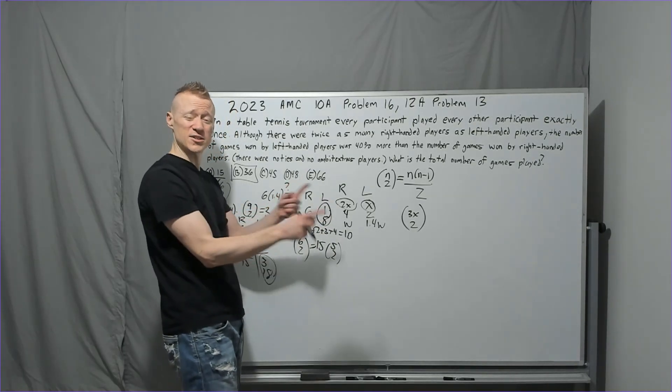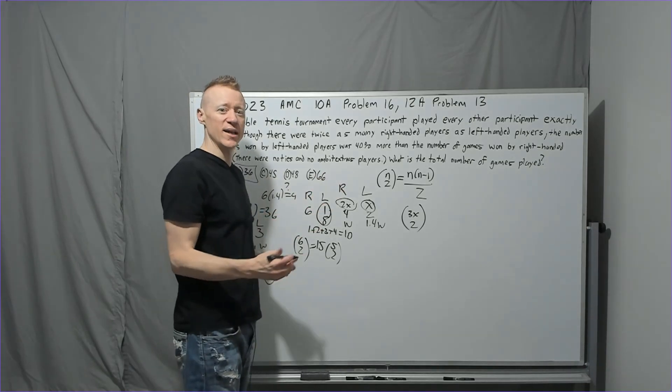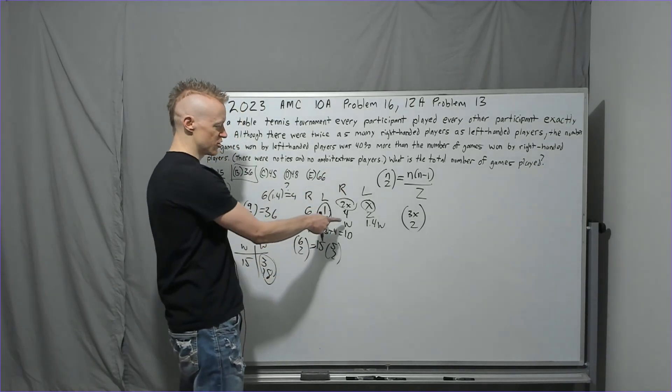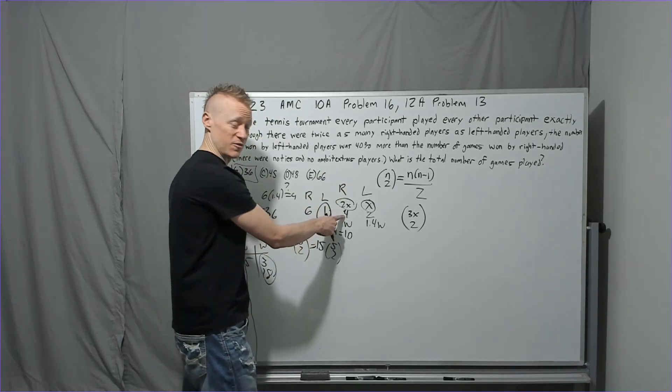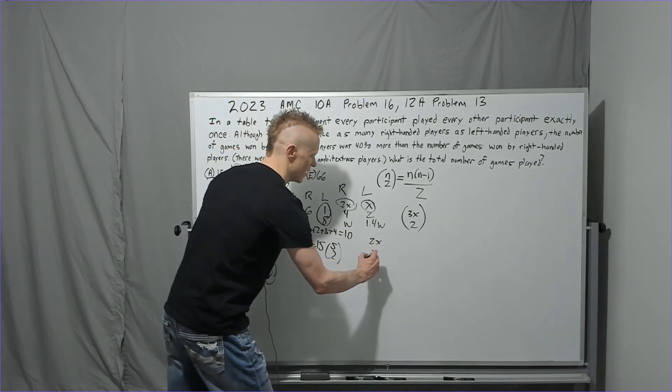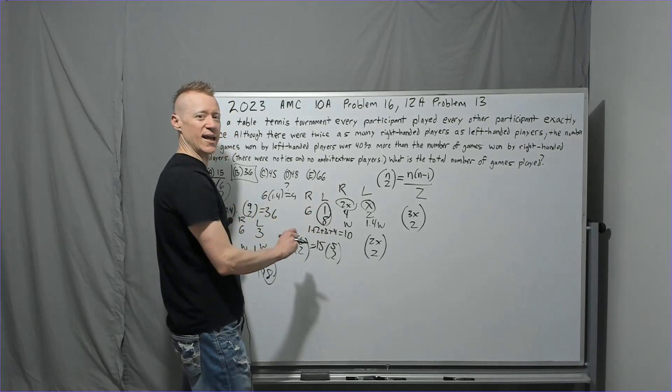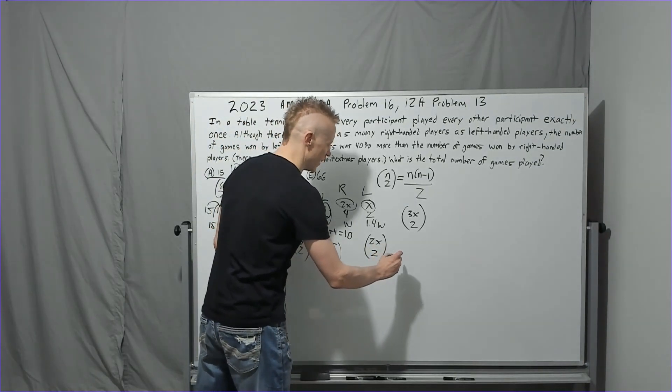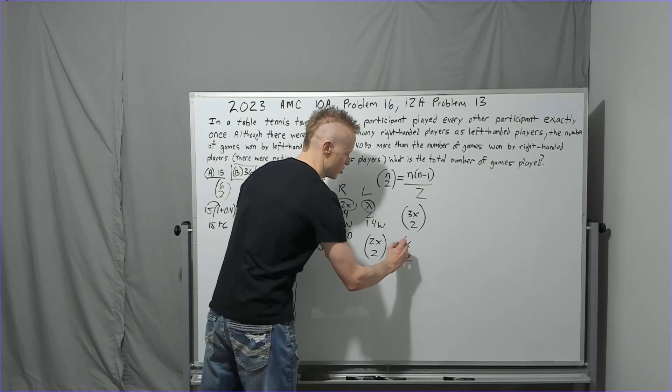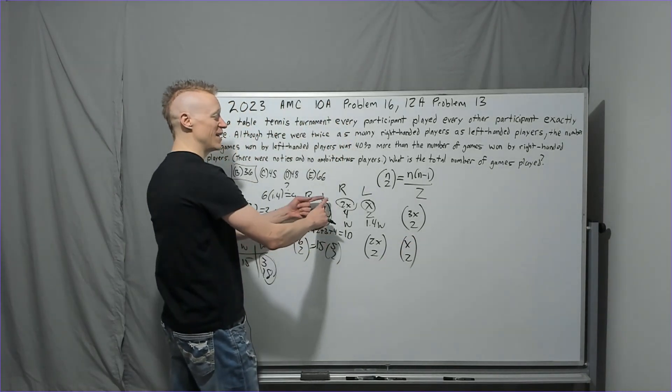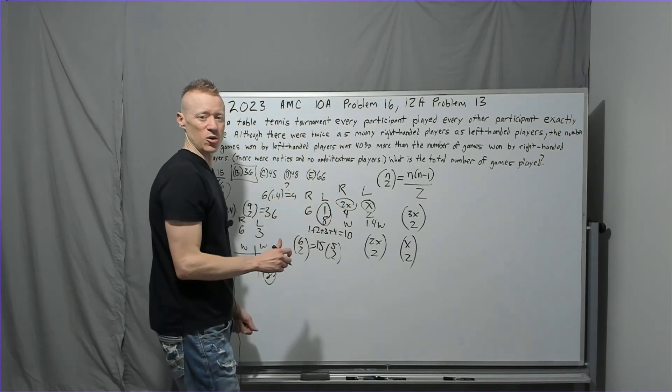But what I need to do is take the right-handed games, because when a right-handed player plays a right-handed player, a right-handed player wins, and they have to play each other. So I take these, the 2x, which is like the 4, and you're going to do 2x choose 2. That's right-handed wins. Only, just automatic right-handed wins. The left-handed wins is going to be x choose 2.